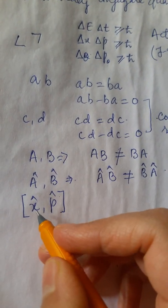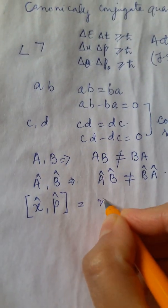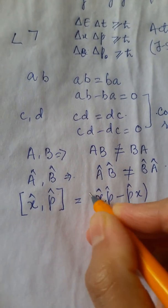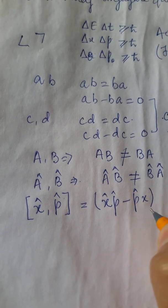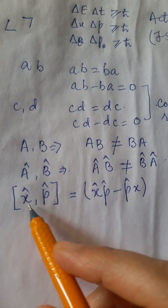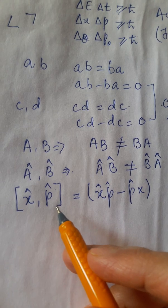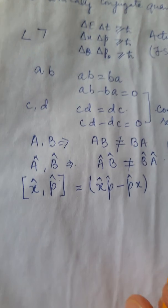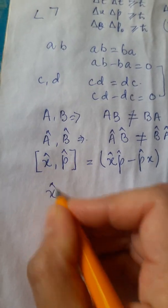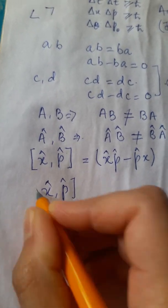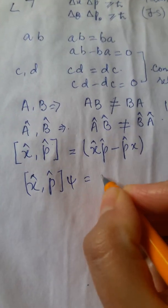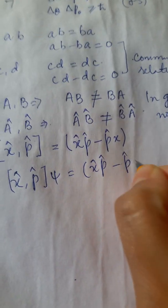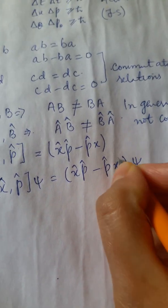Now, this commutator between two operators is defined as XP minus PX, then enclosed in the simple braces. Now, we know that these operators do not mean anything unless they do not operate on a wave function. So let us make this operate on a wave function. Now, this XP commutator operating on a wave function psi is equal to XP minus PX operating on a wave function psi.